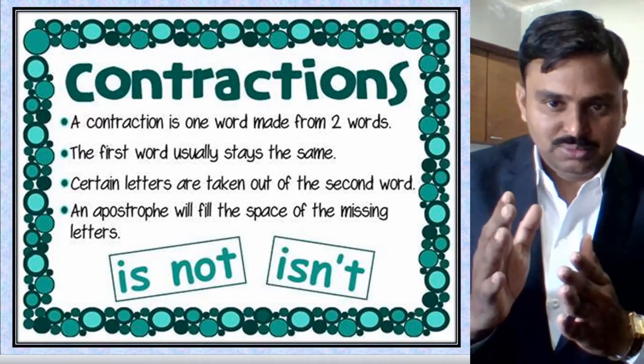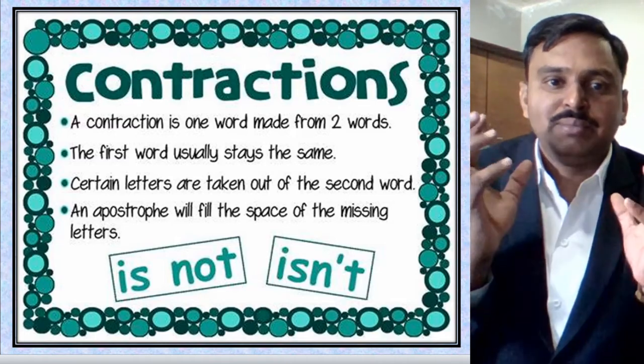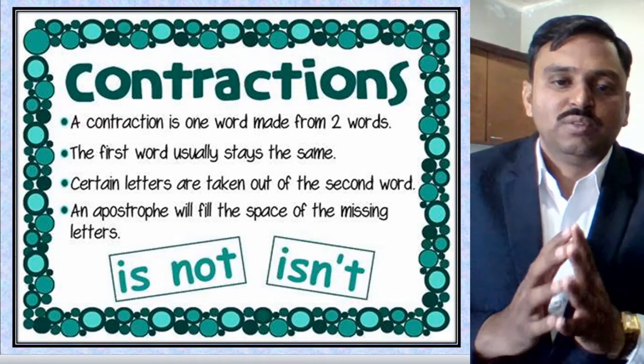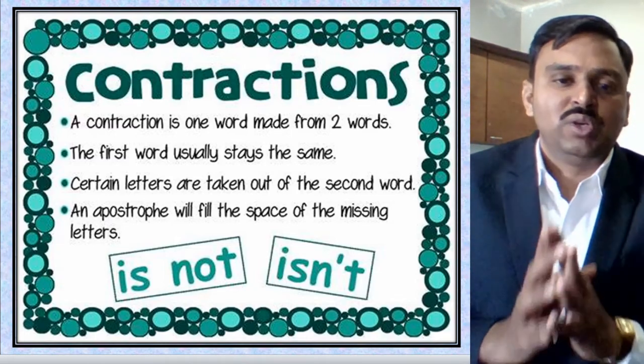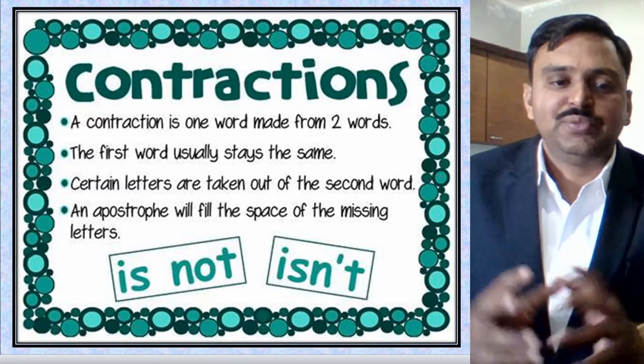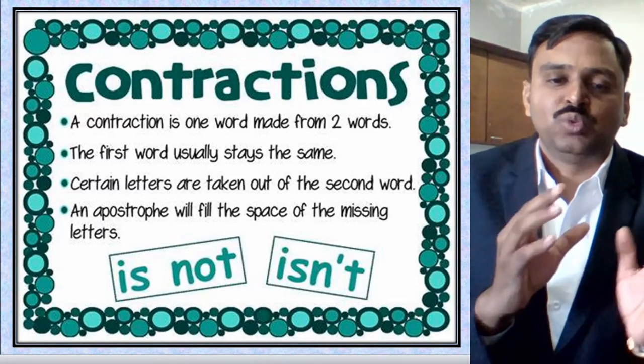For example, 'are' and 'not' are two words, but when we combine them we make just one word: 'aren't.' The first word usually stays the same — whether it is 'is,' 'are,' or 'have,' they remain unchanged.